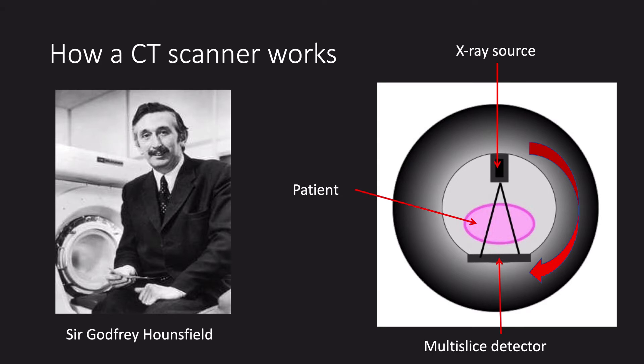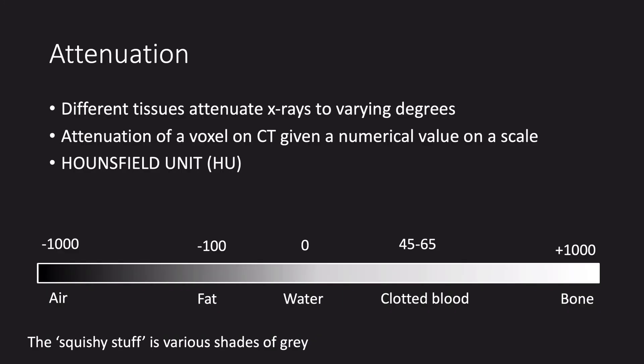CT was invented by British engineer Sir Godfrey Hounsfield in 1972. The patient lies within a rotating gantry. On one side of this gantry is an x-ray source and on the other side, a detector. The x-ray beam and detector rotate around the patient to create the scan. When x-rays pass through tissues, they are attenuated — some of the x-rays are scattered by the tissue, others are absorbed, and some pass through to the detector. X-rays pass through the lungs with very little attenuation, so lots of the rays reach the detector, producing a black image.